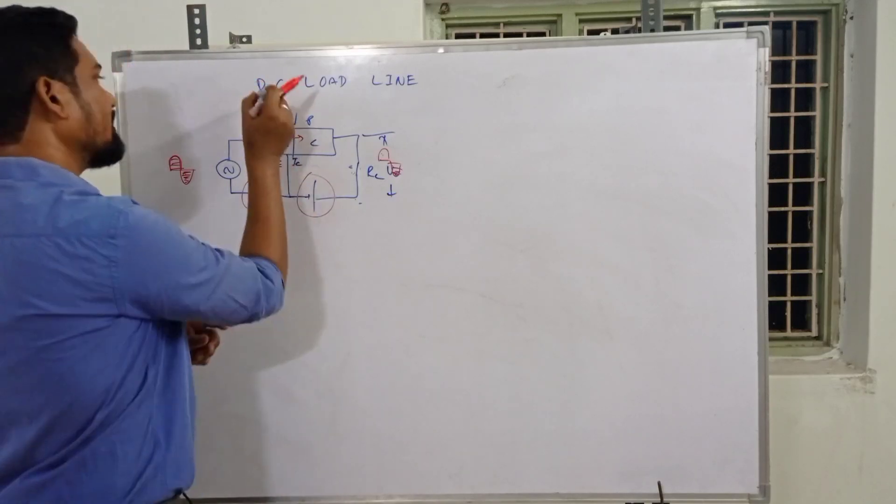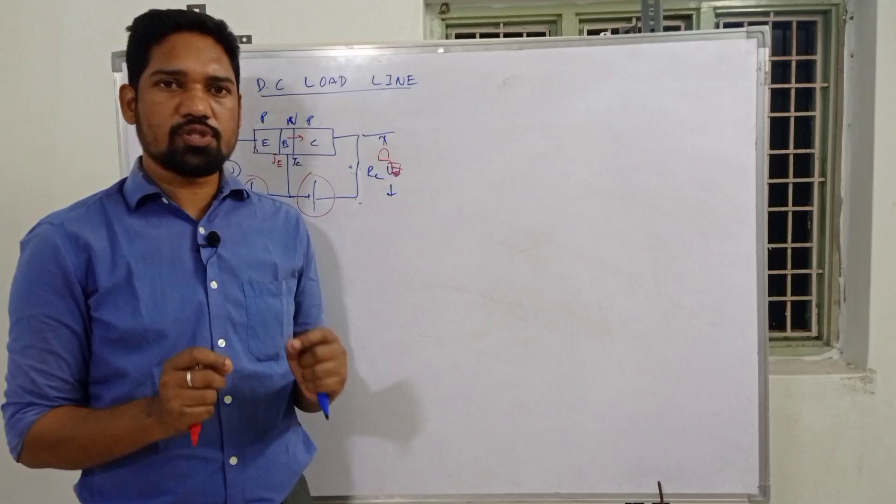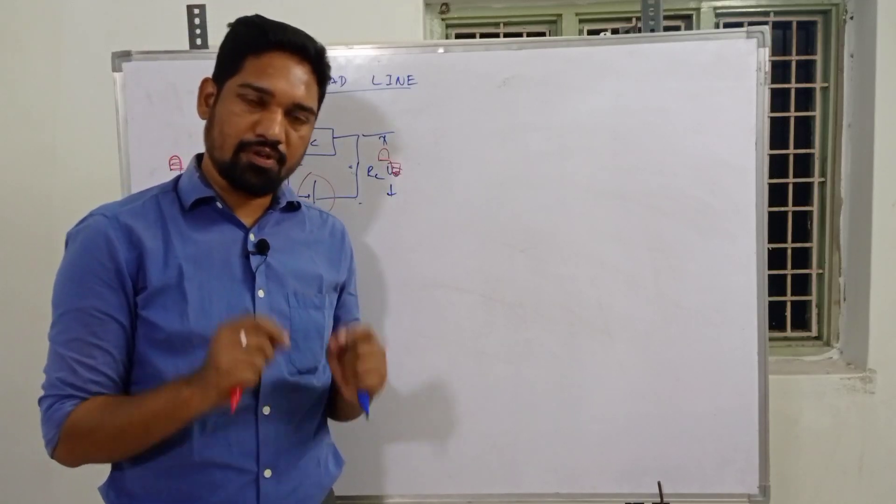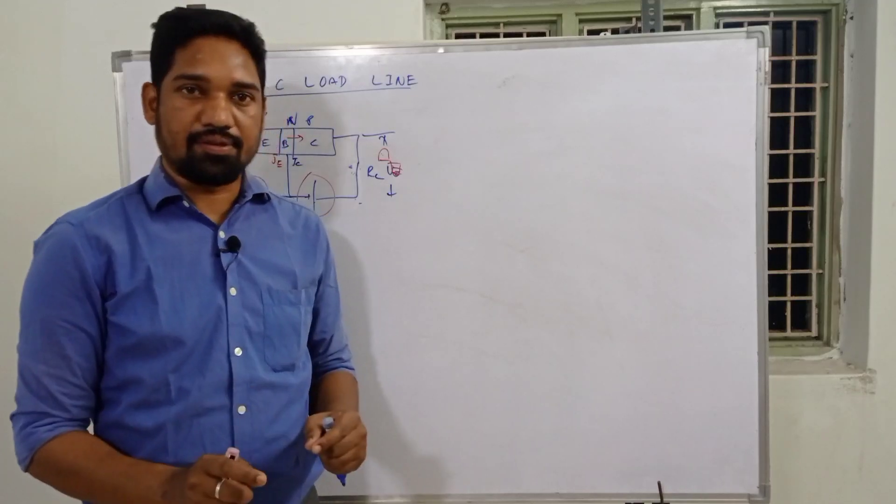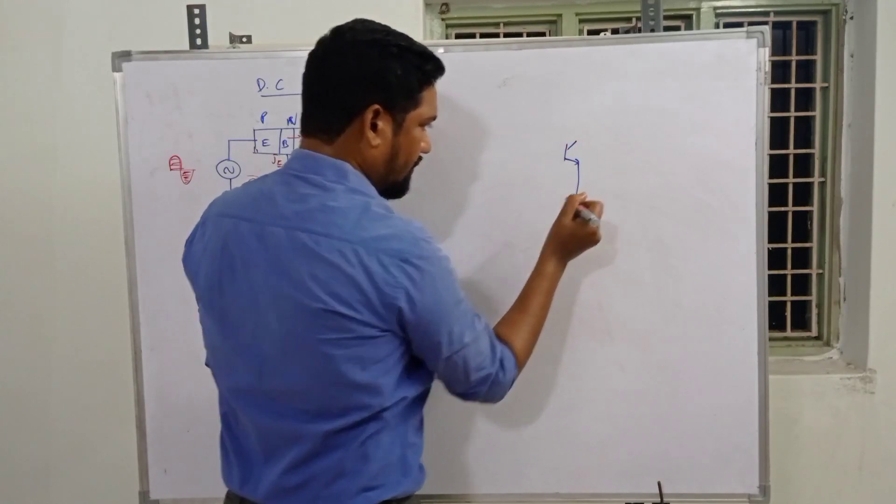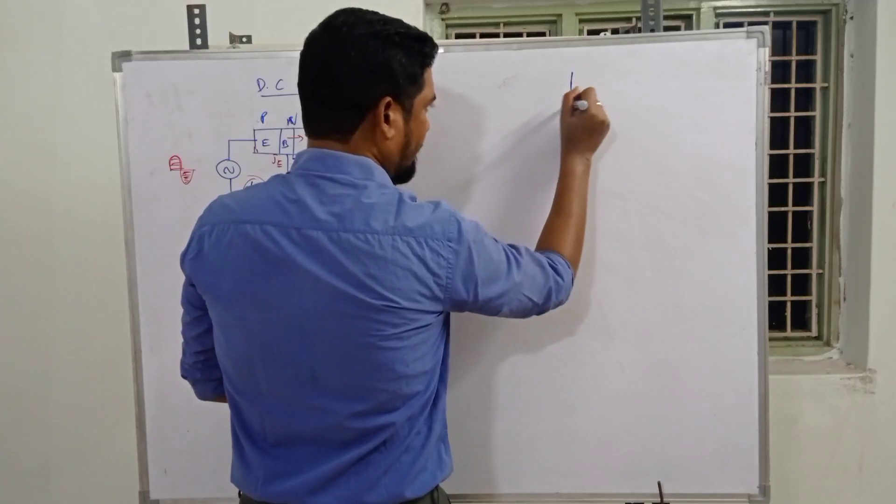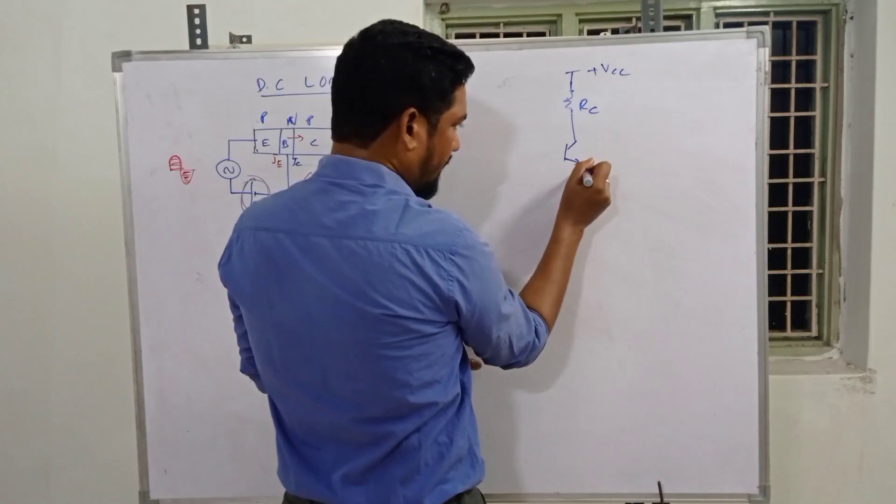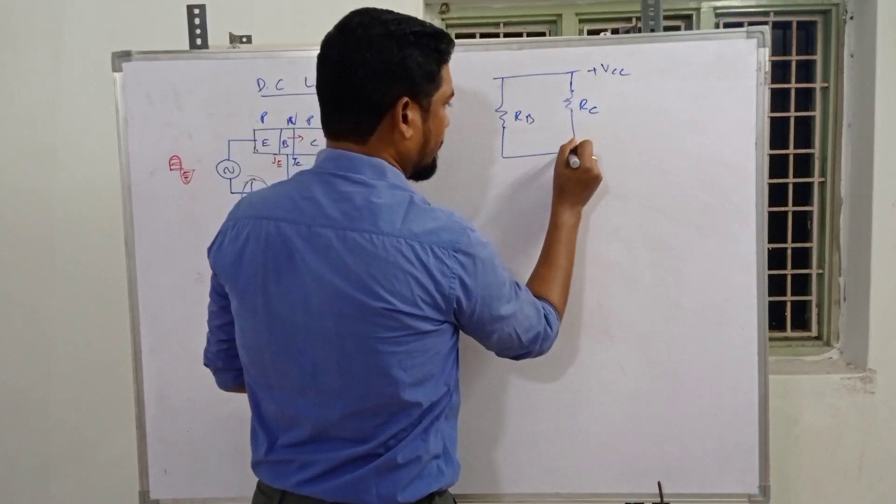Now let's discuss DC load line. If you come across a question without specifying a particular biasing circuit, start from the fixed bias circuit. The fixed bias circuit has a transistor in common emitter configuration with the emitter grounded. We have RC collector resistance connected here, plus VCC supply, and RB base resistance.